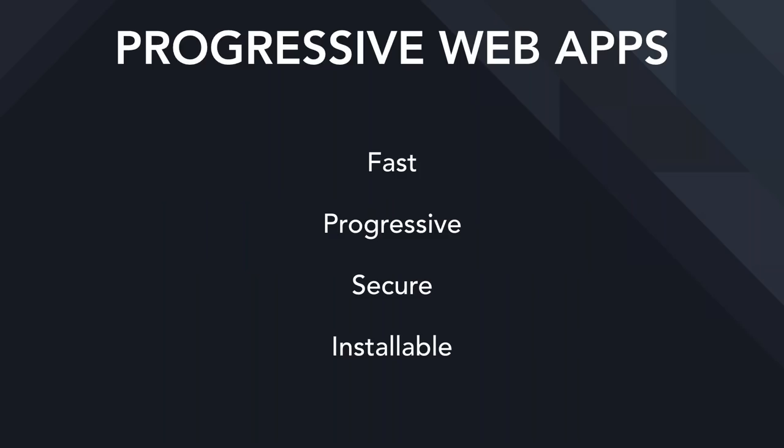To get a progressive web app, we have to hit a few criteria — and I think these are the most important ones. Being fast. No one wants to sit around waiting 14 seconds for an app to load. If we can get our apps as fast as possible — five seconds, maybe even three seconds — users will want to use our app, and we can consider ourselves on that progressive web app path.